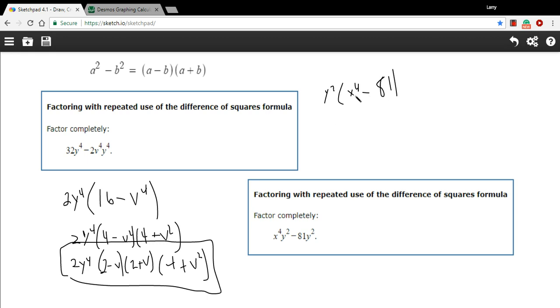And when I divide the second term by y to the squared, I just get 81 left. Aha, now this is a difference of squares. So I can rewrite x to the fourth minus 81 as x squared minus 9 times x squared plus 9.